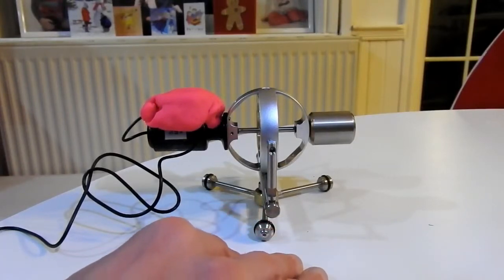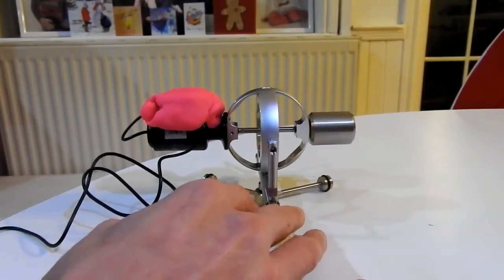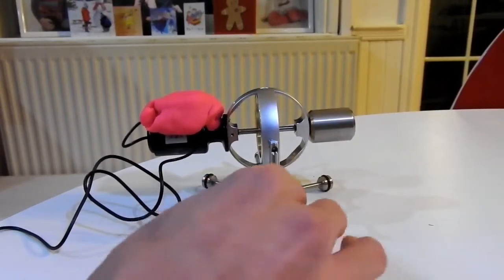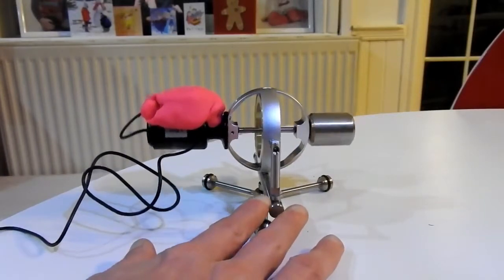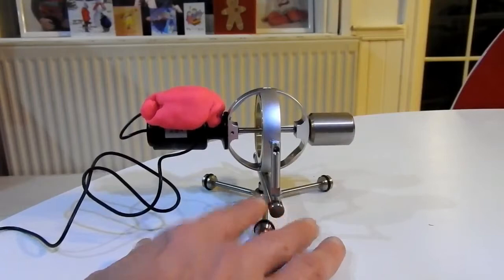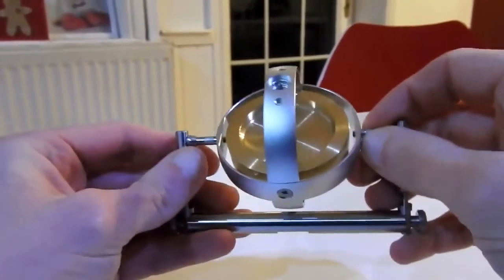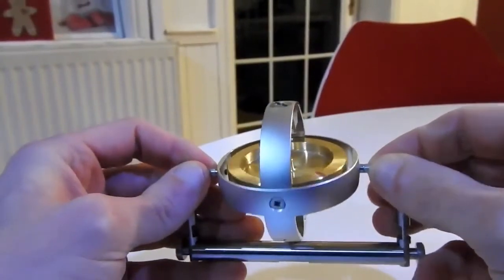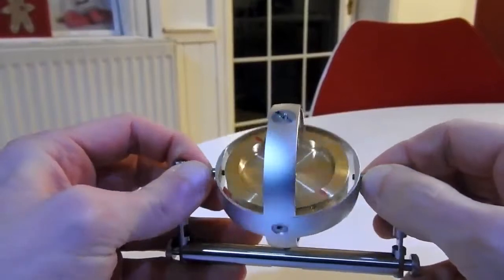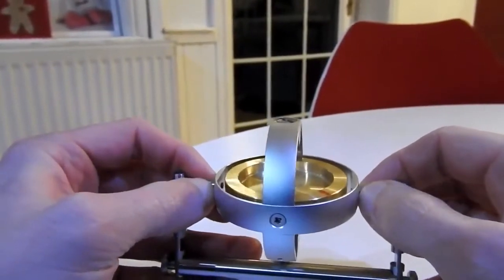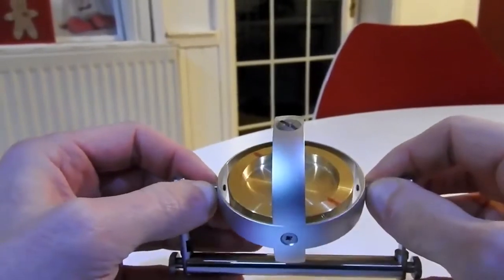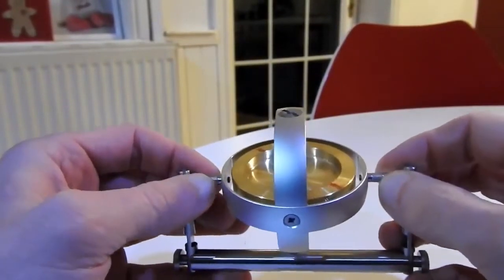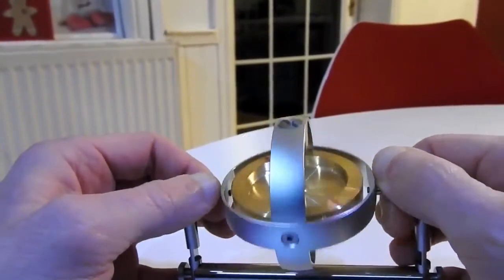And what of the artificial horizon? That's a gyro as well. Why doesn't that need resetting every 15 minutes? Surely that would be subject to the exact same drift as the directional gyro. But it's actually considered bad practice to realign your artificial horizon during flight because you don't know whether you're aligning it to a straight and level orientation. So why does the directional gyro drift that the artificial horizon gyro doesn't?